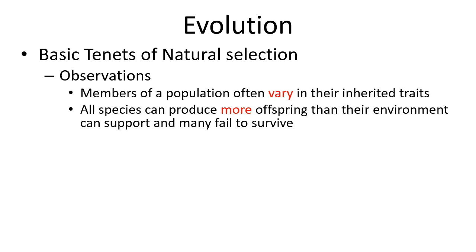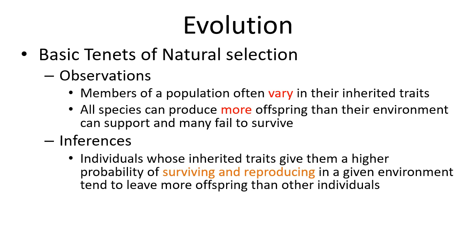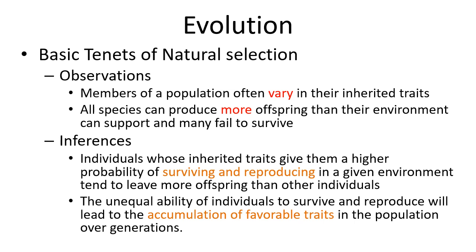This was an observation made by Malthus, which was important for understanding the first hypothesis formulated by Darwin about evolution. From there we can infer that individuals who have traits giving them a higher probability of survival and reproduction will have more offspring represented than other individuals. This unequal ability will lead to the accumulation of those favorable traits in the population over generations.